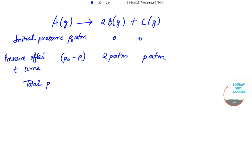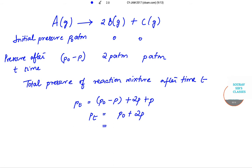Okay so now we move on to the total pressure. So the total pressure of the reaction mixture after time T is given by Pt equals P naught minus P plus 2P plus P. So let us calculate this Pt. So Pt is equal to P naught plus 2P. And if we just need to know about this P, so it will be equal to Pt minus P naught by 2.